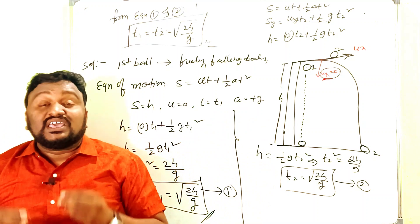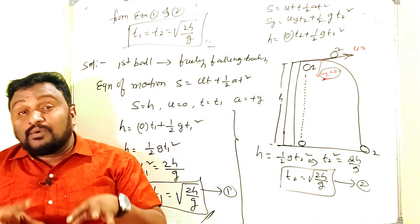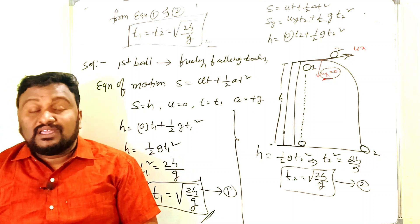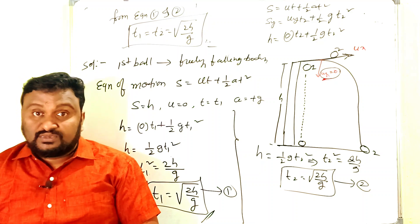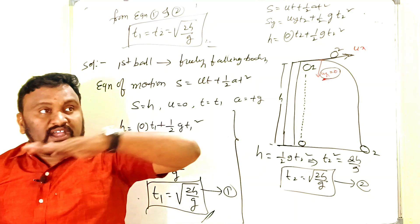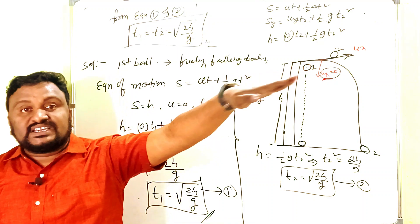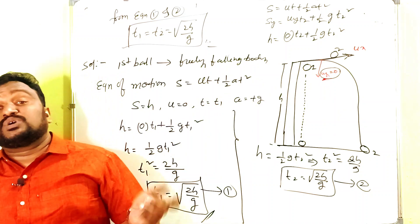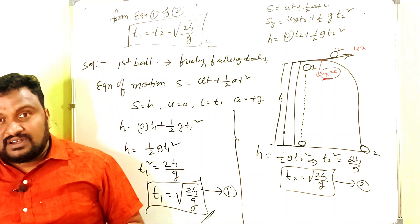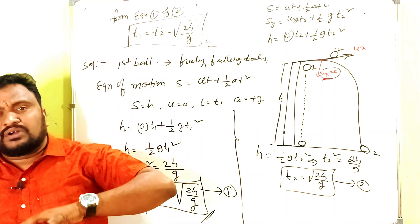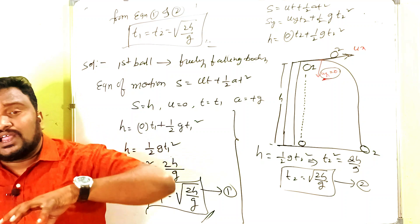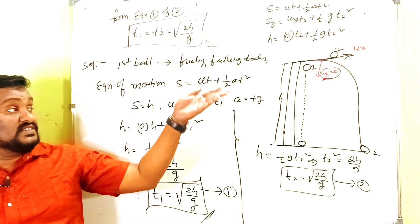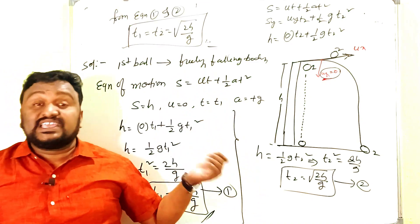Both balls land at the same time because in both cases the balls are affected only by gravitational force in the vertical direction. In the horizontal direction there is some force, but gravitational force dominates. That is why both bodies come down within the same time.